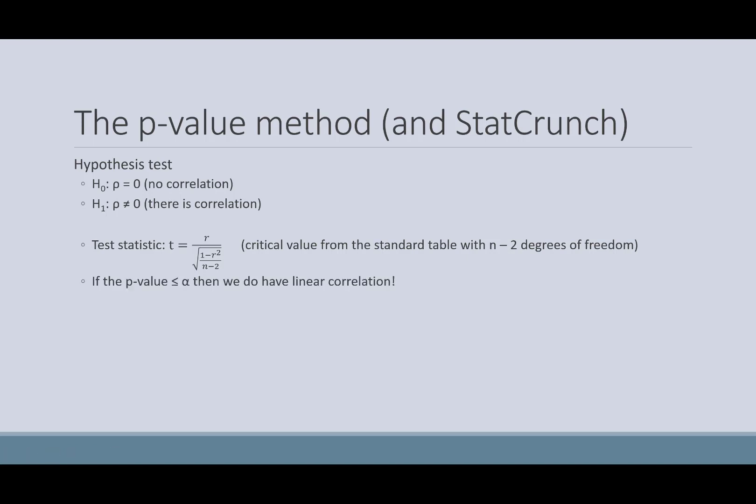Now, once we get into StatCrunch and we look at how to compute this, just like with all of our other hypothesis testing, if the p-value is lower than your alpha, than your significance, then we do have enough evidence, in this case, to reject the null hypothesis, which would say that there was no correlation, and so we have evidence to support that there is correlation.